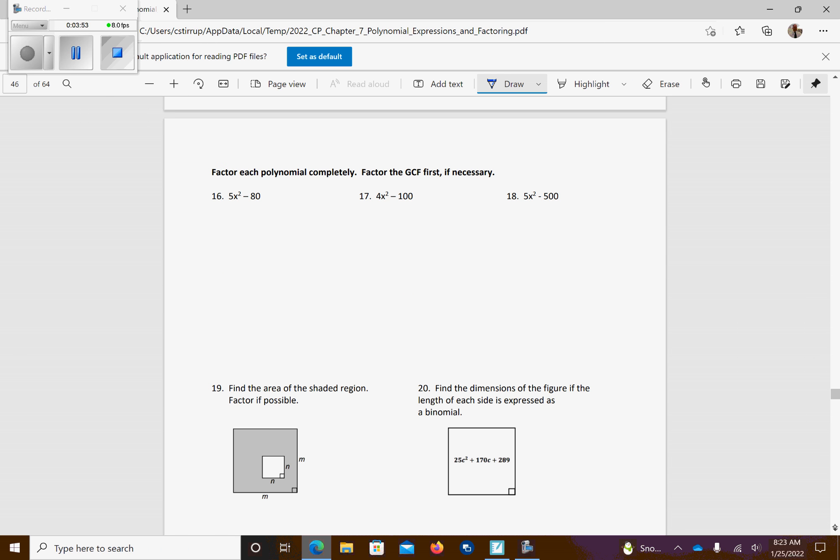Number 17, I can factor a 4 out first. That's going to give me x squared minus 25. This is now the difference of 2 squares, but don't forget to bring the 4 down. So x plus 5, x minus 5. Done.